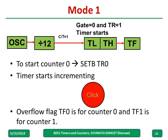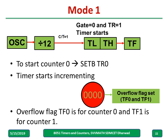In Mode 1, to start the counter use the instruction SETB TR0. The timer starts incrementing when SETB TR0 is written, and continues incrementing. The overflow flag TF0 is for Timer 0 and TF1 is for Timer 1 — it becomes 1 when there is an overflow. The timer continuously increments through values up to FFFF; when it rolls over to 0, the overflow flag is set. Which flag is set depends on which timer you are using.